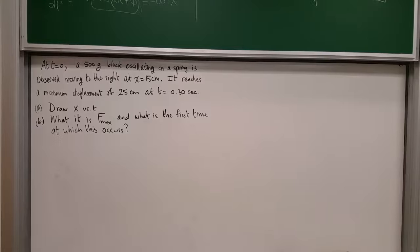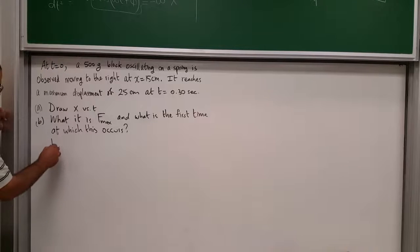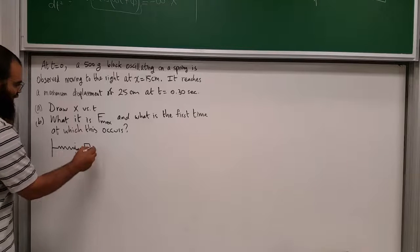Now here's an example where the phase φ is not zero. At t = 0, a 500 gram block oscillating on a spring is observed moving to the right at x = 15 centimeters. It reaches a maximum displacement of 25 centimeters at t = 0.3 seconds. We need to draw x versus t, find the maximum force on the block, and at what time it first occurs.